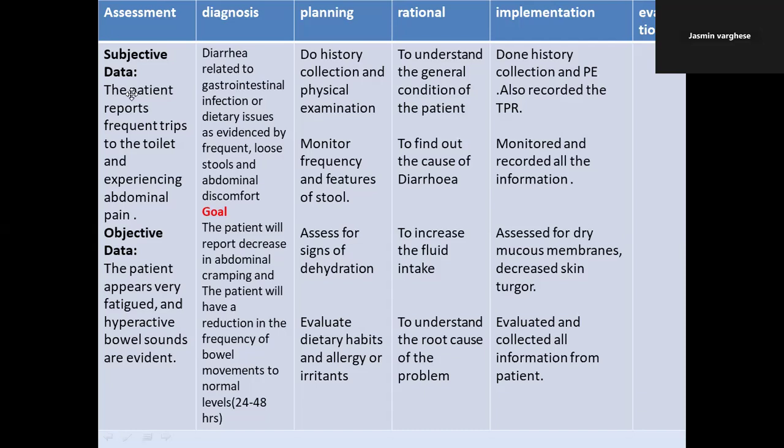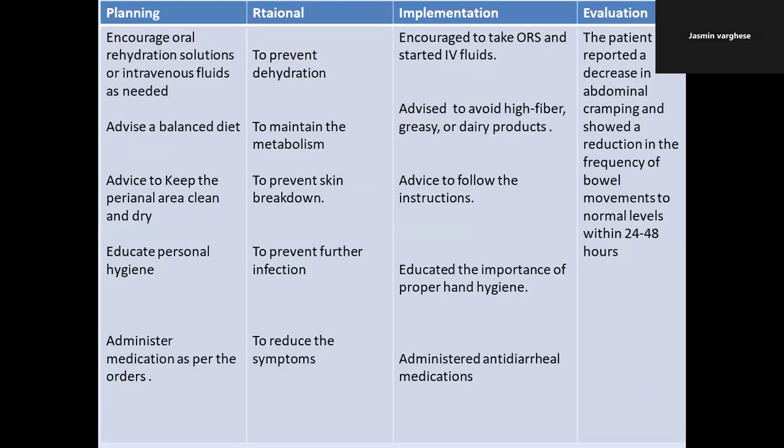The fourth planning item is to evaluate dietary habits and allergies or irritants, because you need to find the root cause of the problem. The rationale is to understand the root cause. In implementation, write that you evaluated and collected all relevant information from the patient. The fifth planning item is to encourage oral rehydration or ORS and IV fluids as needed, with the rationale being to prevent dehydration.